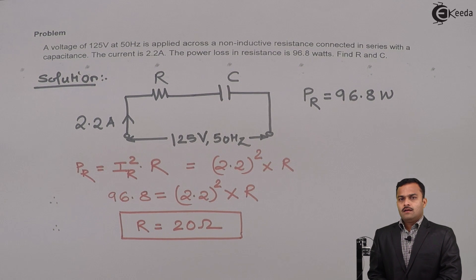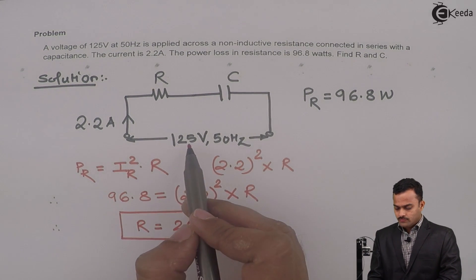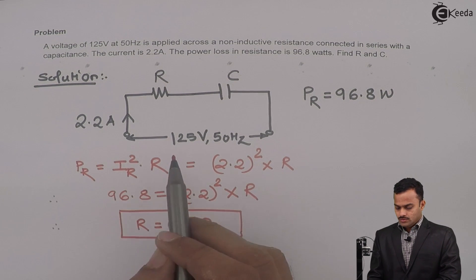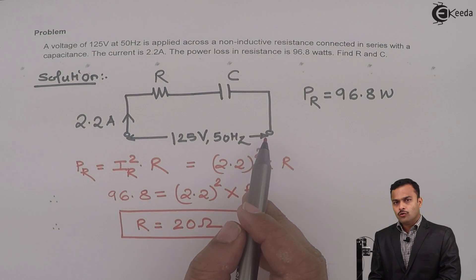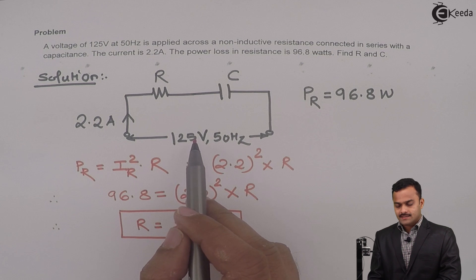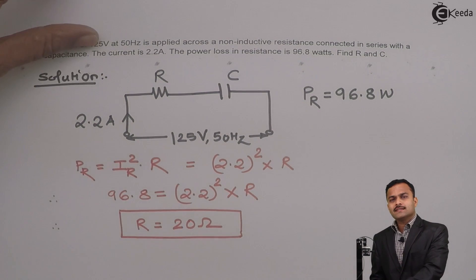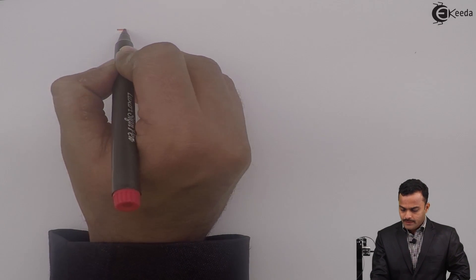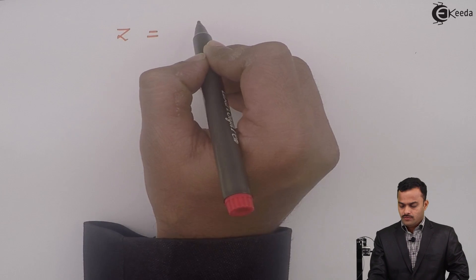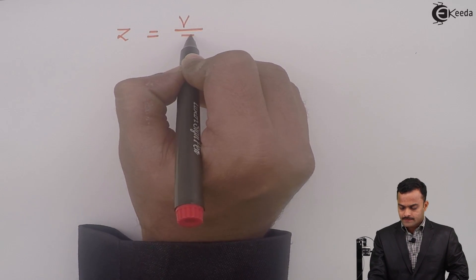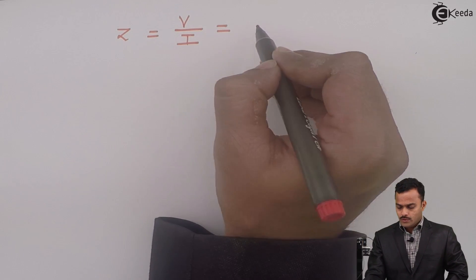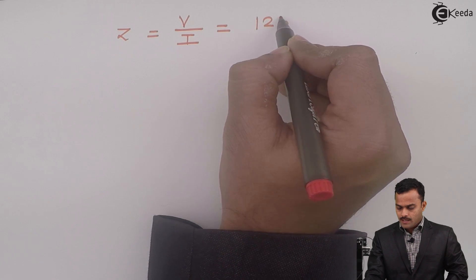Let's calculate C. For that purpose, I will use voltage and current. So total voltage is 125 volt and because of that, current flowing is 2.2 ampere. If I know voltage and current, I can get impedance of the circuit. So impedance Z is nothing but V by I.